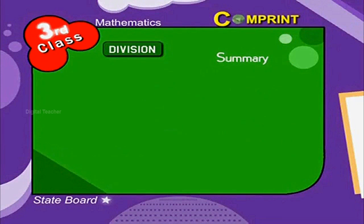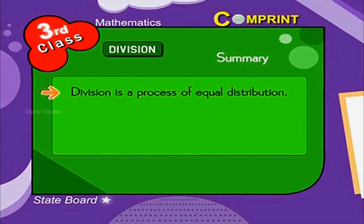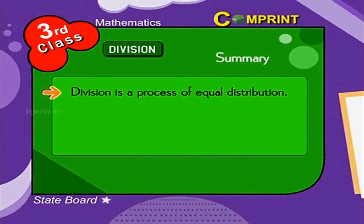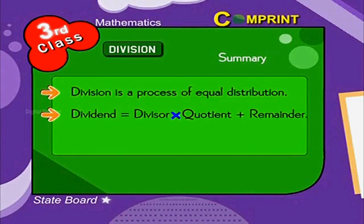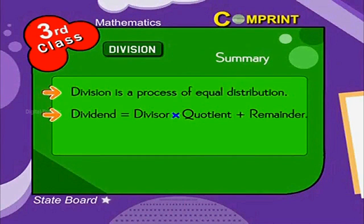Points to remember: Division is a process of equal distribution. Dividend is equal to divisor into quotient plus remainder.